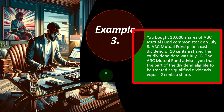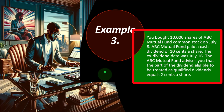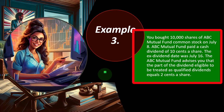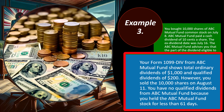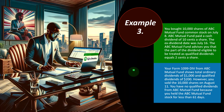Example three: You bought 10,000 shares of ABC mutual fund on July 8th. ABC mutual fund paid a cash dividend of 10 cents per share; the ex-dividend date was July 16th. The fund advises you that the part of the dividend eligible to be treated as qualified equals 2 cents per share. Your Form 1099-DIV shows total ordinary dividends of $1,000 and qualified dividends of $200. However, you sold the 10,000 shares on August 11th. You have no qualified dividends because you held the mutual fund stock less than 61 days.